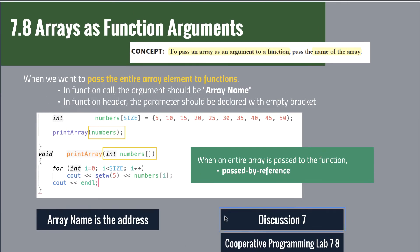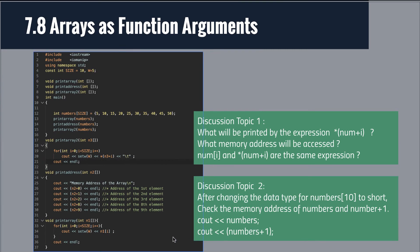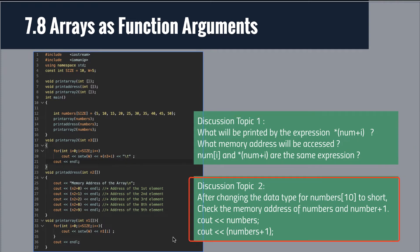Now let's make code examples and have some discussion about array notation. The first discussion topic is what will be printed by the expression with the asterisk notation in front of the array name, and also what memory address will be accessed. In the second topic, let's make some changes to the data type of the array — for example, if we change integer to the short data type, check out the memory address difference between two elements.